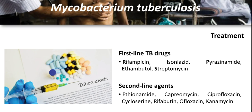Not everyone infected with TB bacteria becomes sick, so two TB-related conditions exist: latent TB infection and TB disease. Both latent TB infection and TB disease can be treated. Without treatment, latent TB infection can progress to TB disease. TB disease is curable; it is treated by a standard 6-month course of 4 antibiotics, sometimes 5. Common drugs — remember the mnemonic RIPES: R for rifampicin, I for isoniazid, P for pyrazinamide, E for ethambutol, and S for streptomycin.